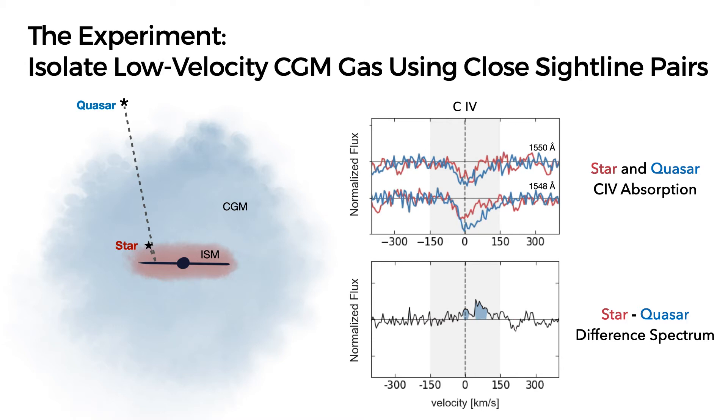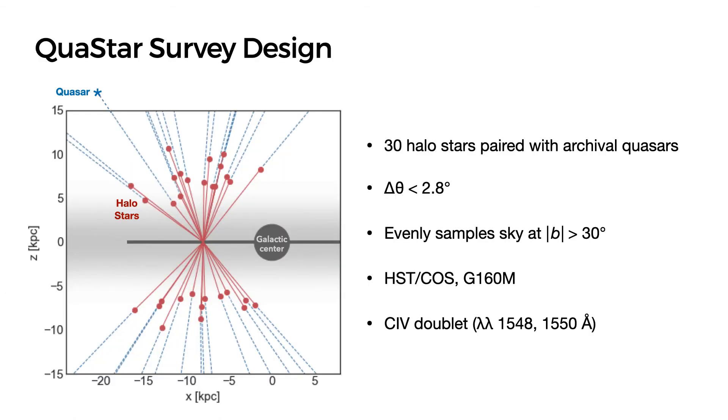In this work, we focus primarily on gas moving at less than 150 kilometers per second. The full quastar survey pairs 30 archival quasar spectra with new observations of halostars with well-constrained distances of about 6 to 11 kiloparsecs.